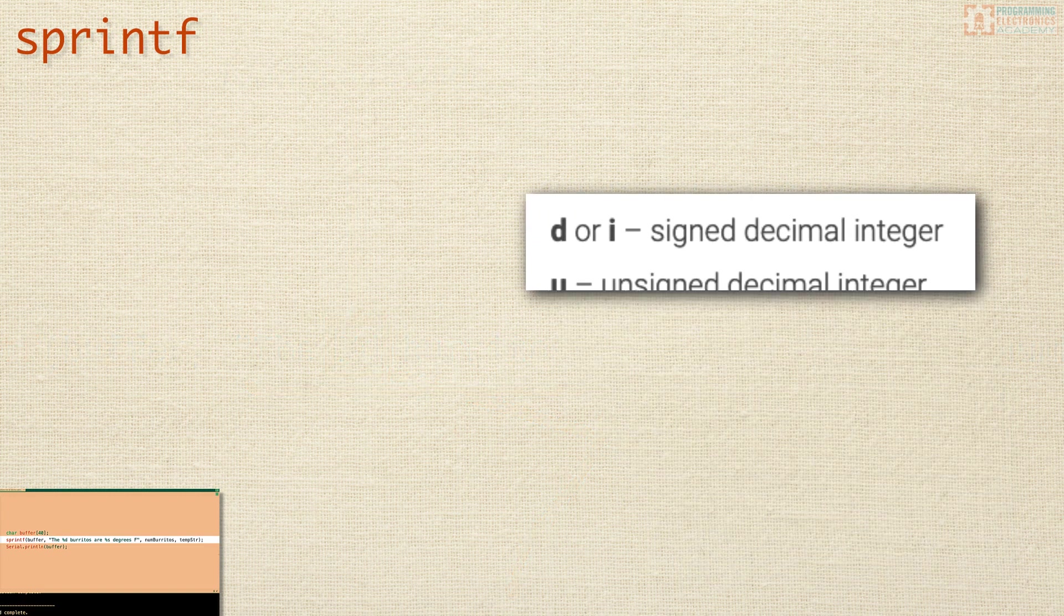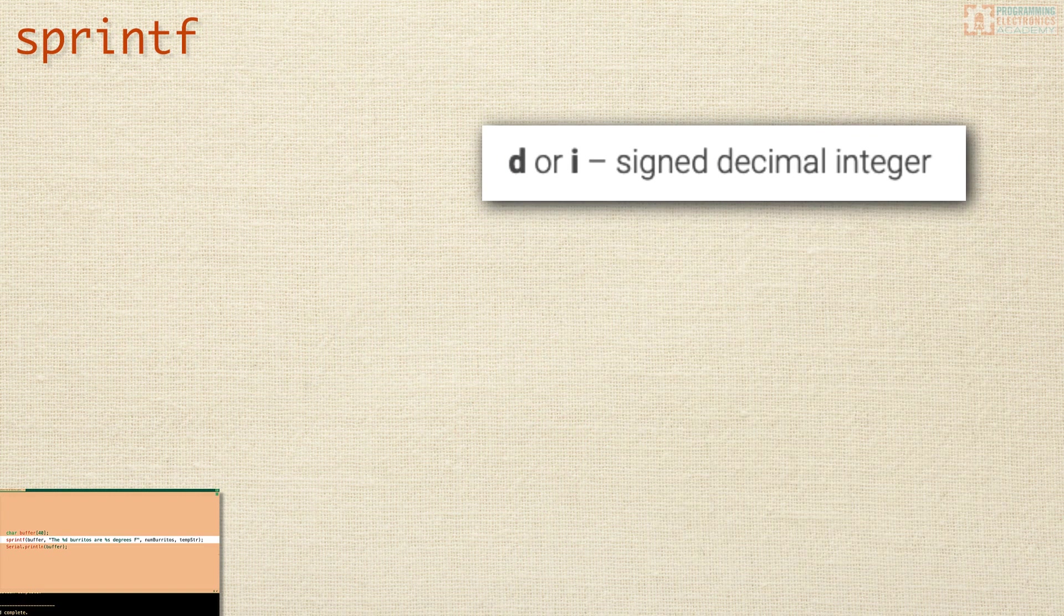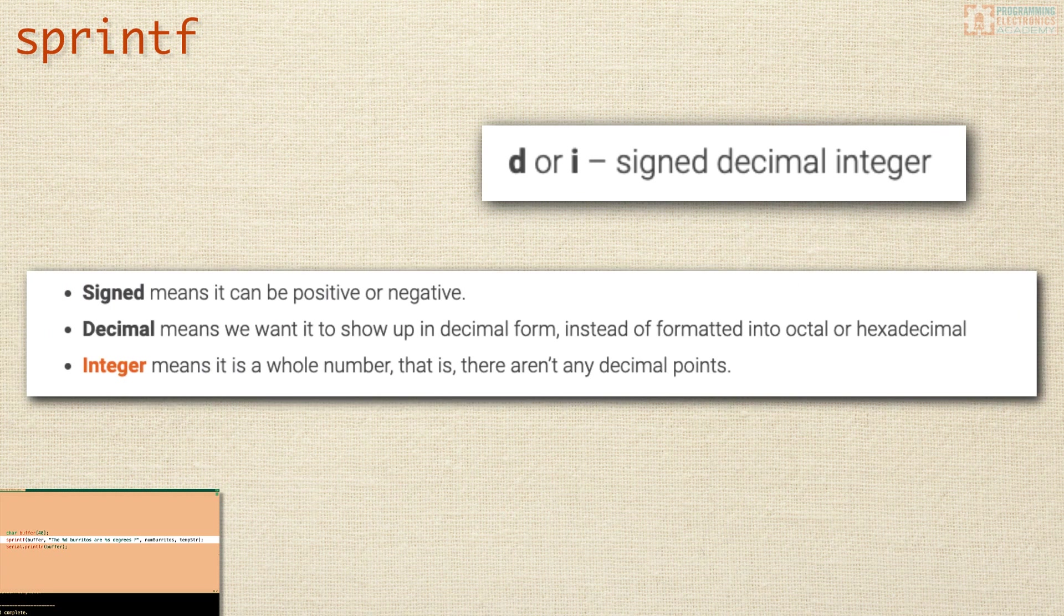Now, if you're wondering what the heck is a signed decimal integer? Well, here's the scoop. Signed means that it can be positive or negative. Decimal means that we want it to show up in decimal form, instead of like formatted as an octal or hexadecimal or something like that. Integer means that it's just a whole number. That is, there aren't any decimal points in it.